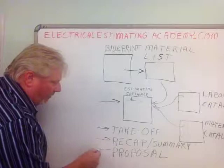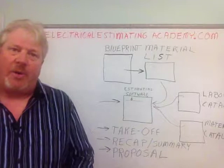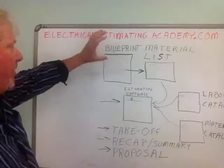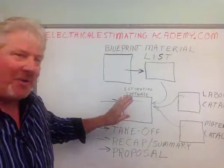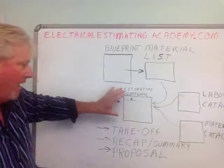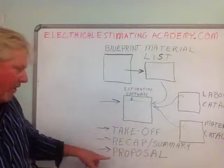A proposal is what you submit or send to your client. So again, those are the main components: you have a blueprint, you make a material list, from the material list you input your materials into the software. The software pulls from the labor catalog and the material catalog, and it comes up with totals that are shown on the recap or the summary. Then when you're done with that, you create a proposal and propose to your client what it is you want to provide.